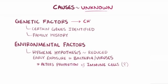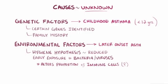In general, causes of childhood asthma diagnosed before age 12 are thought to be due to a stronger genetic influence, whereas later-onset asthma is more likely to be due to environmental factors.